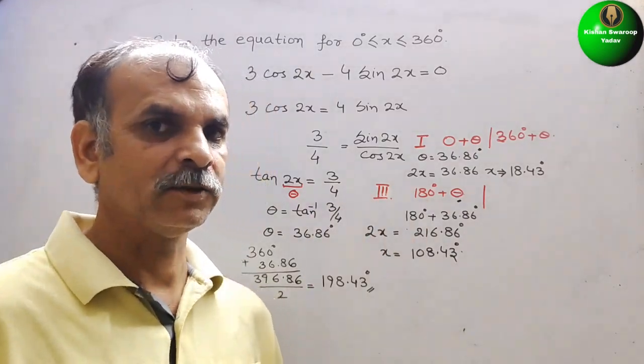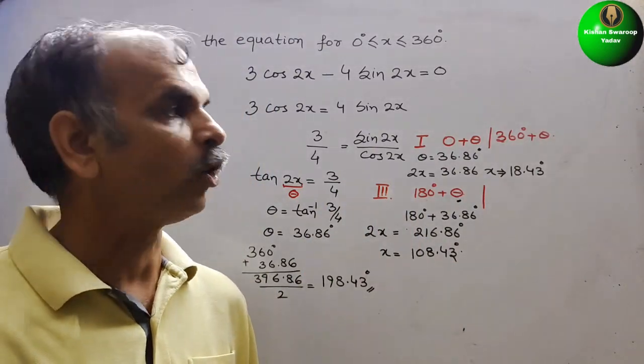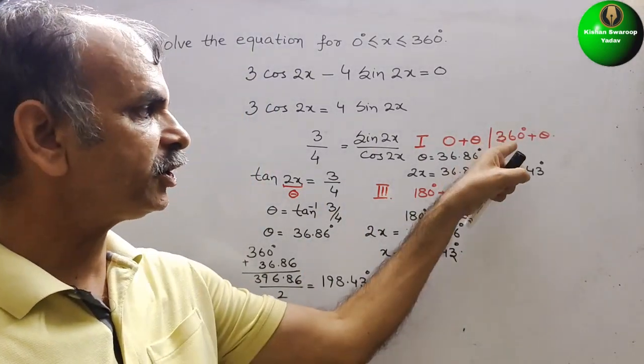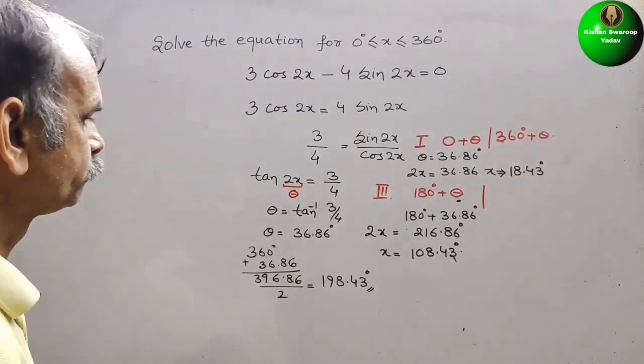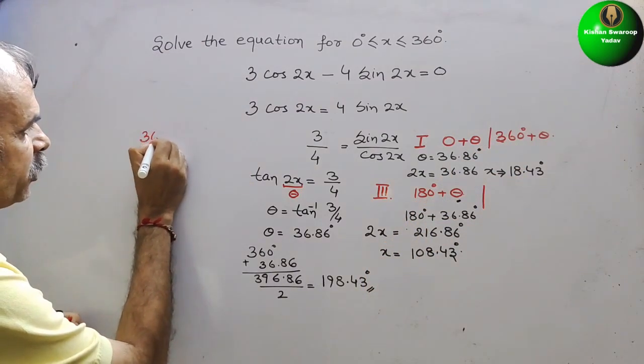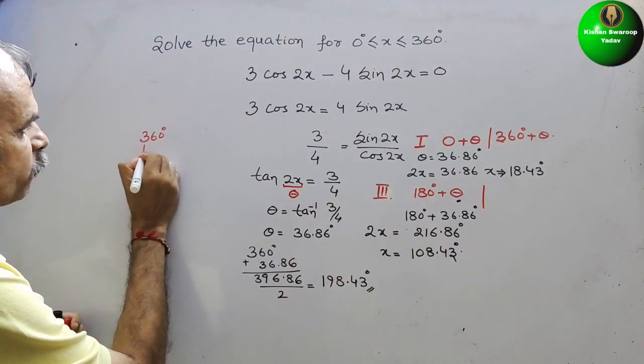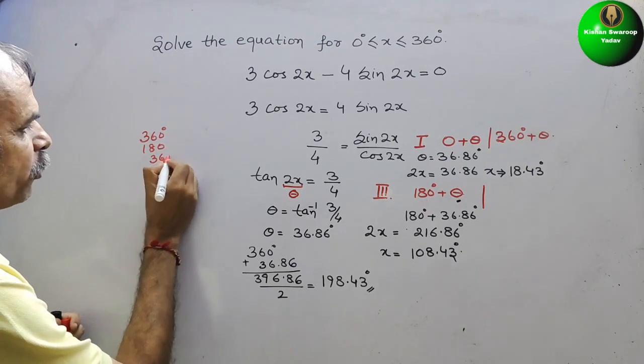Next we will check if we got the fourth solution. What is that? 360 plus 180 plus theta.